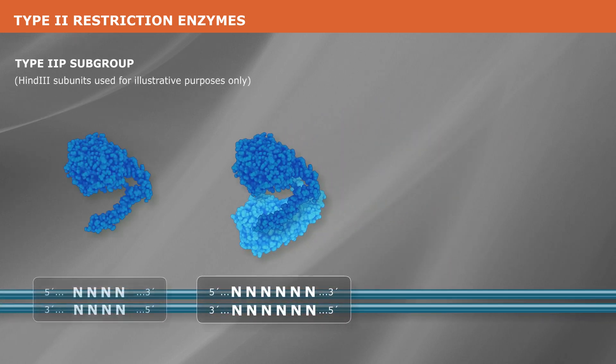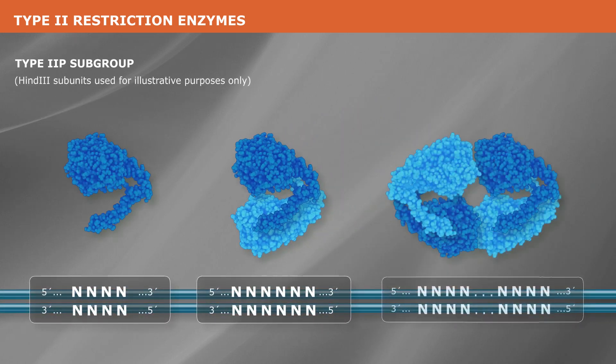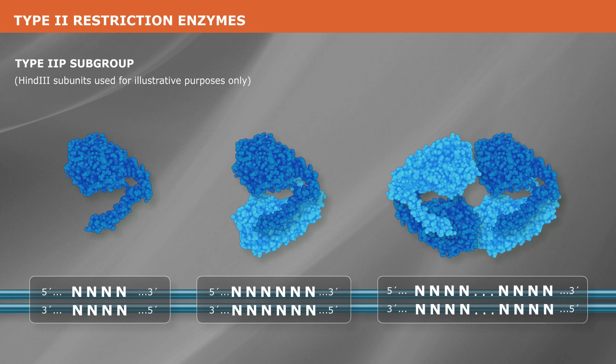The subunit composition of type 2P enzymes depends on the length of the enzyme's recognition sequence. Enzymes that recognize short, four base pair sequences act as monomers, comprising single protein chains, while enzymes that recognize longer, six to eight base pair sequences typically act as homodimers, comprising two identical protein chains. Still other type 2P enzymes act as dimers of dimers, or homotetramers.